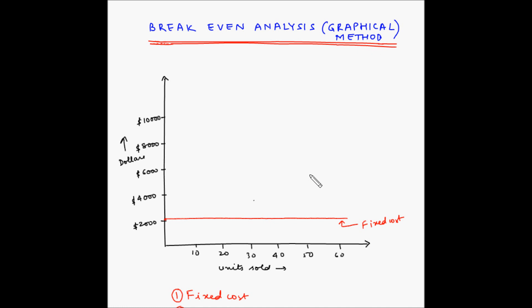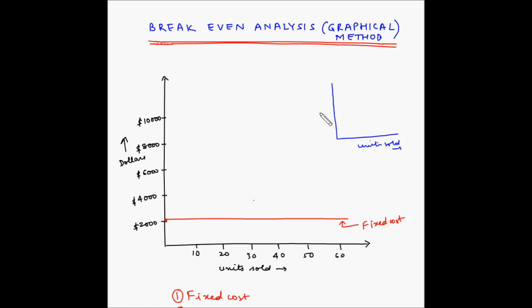Now let us move to variable cost. Variable cost varies by the number of units sold. So if we have to plot the variable cost on a graph with units sold on the x-axis and dollar amount on the y-axis — if we don't produce anything, that is if the number of units is zero, then there is no cost because we are not producing anything. So the line for variable cost will start from the origin and go upward. This will be representing the variable cost.